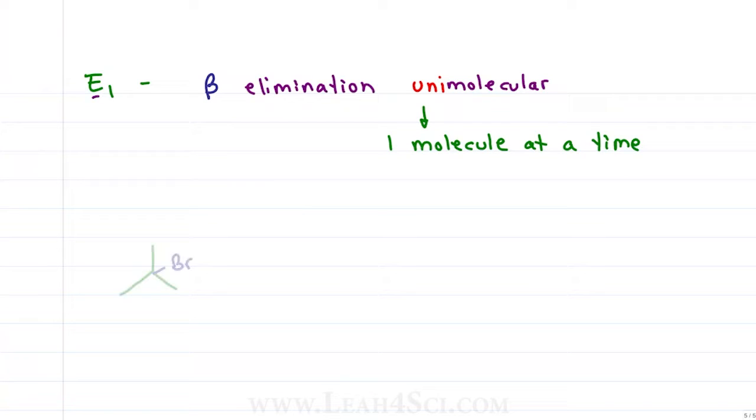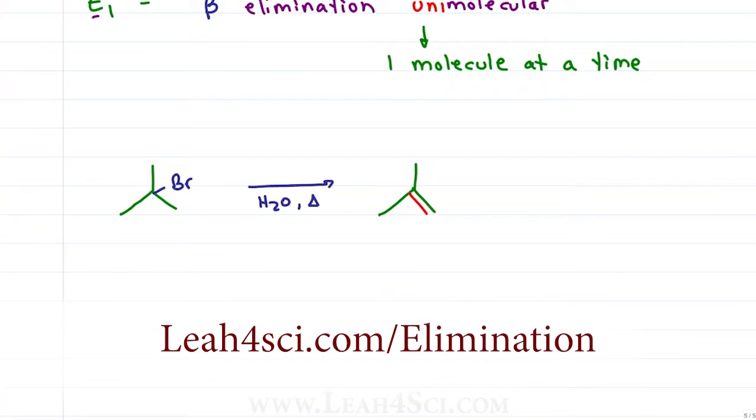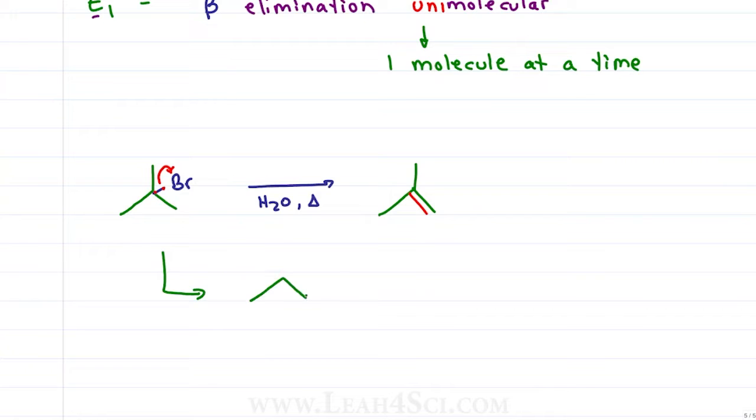Let's take a look at what happens when 2-bromo-2-methylpropane reacts in a hot aqueous solution to give us 2-methylpropene. I cover the mechanism in detail in the video's link below but as a summary, we have the bromine breaking away from the carbon chain without the use of a catalyst, without anything kicking it out, it breaks away on its own, leaving us with a deficient carbon or a carbocation and a Br-minus in solution.